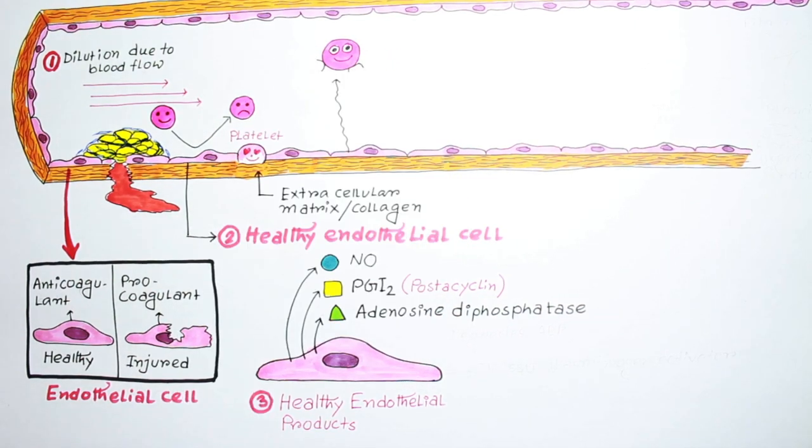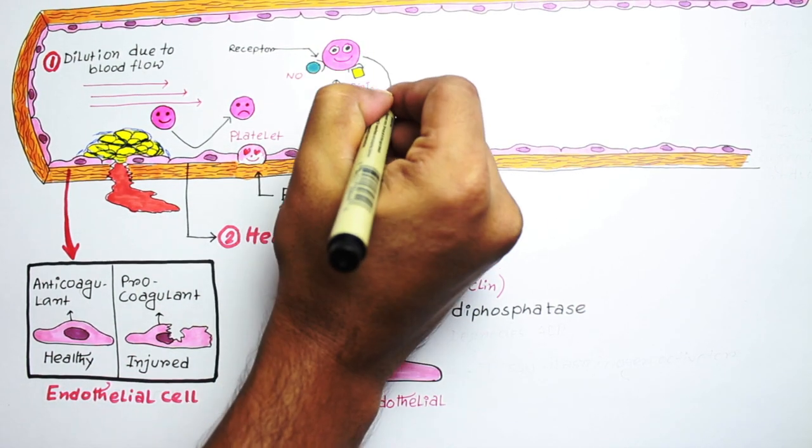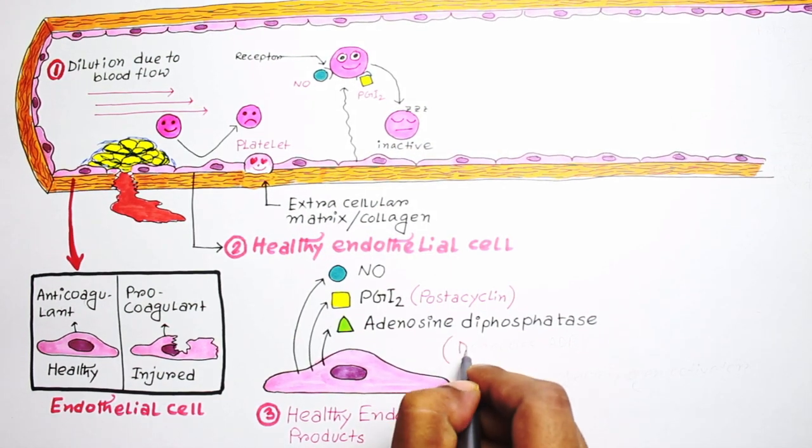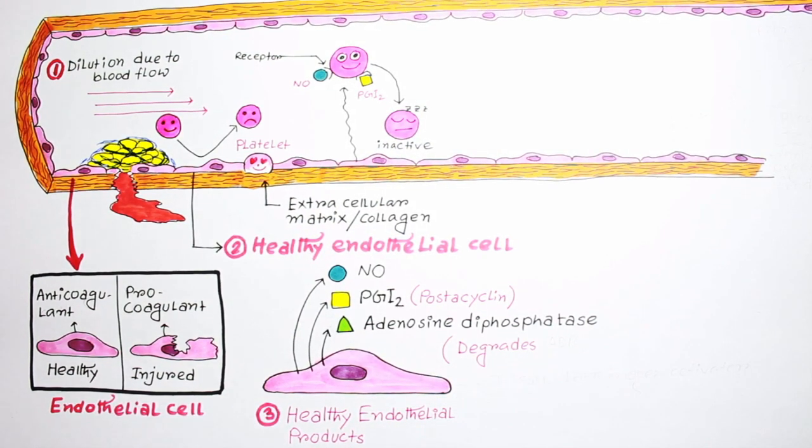These substances bind with the platelet and inactivate those receptors so that the platelet is unable to bind with the endothelium. And adenosine diphosphatase degrades the ADP, which is necessary for platelet aggregation.